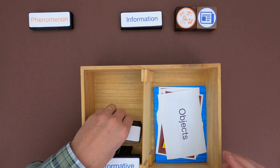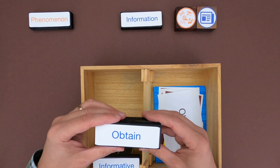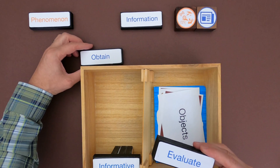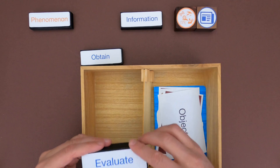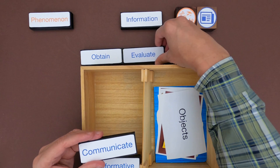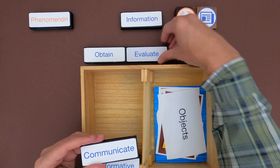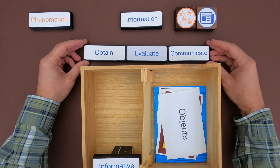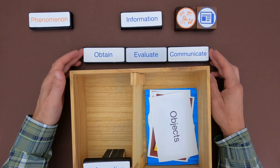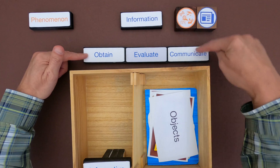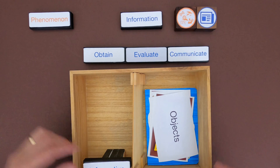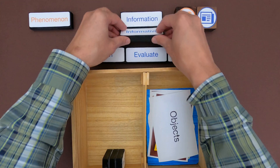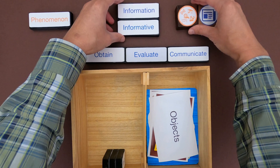When taking in information, you really go through three steps. The first thing you do is you obtain or receive information. Then in your brain you're going to evaluate that information, or make sense of it. And then the last thing you do is you communicate that information. So this is taking it in, making sense of it, and then eventually communicating it.